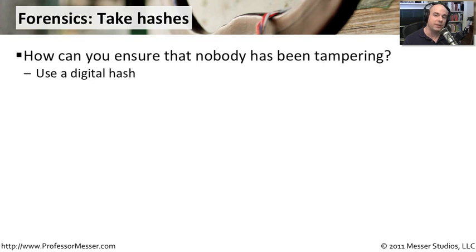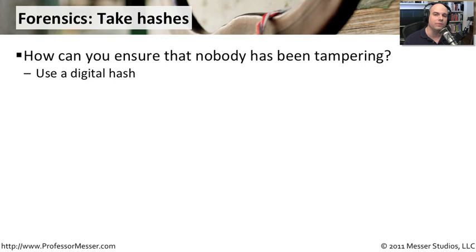We have some things we can do to check files, and the easiest and probably one of the most accepted is doing something like taking a hash of the file. This allows us to essentially create a fingerprint of a file — you'll see it referred to as a digital fingerprint. And if that file or any part of that file ever changes, you'll notice that the fingerprint will change. We're going to look at this in just a moment.